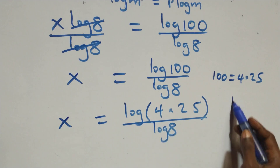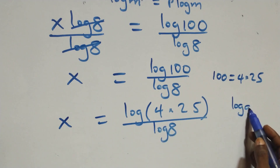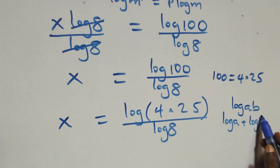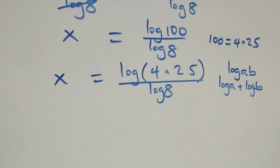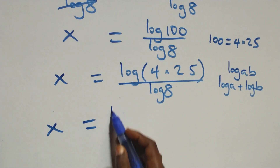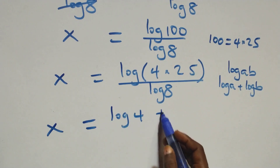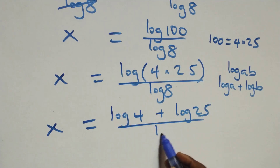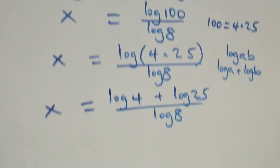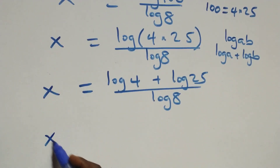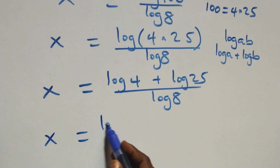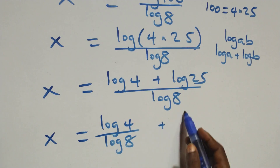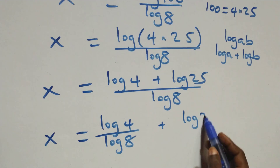This follows the product law of logarithm: log(a times b) can be expressed as log a plus log b. So here we have x equals to log 4 plus log 25 over log 8.